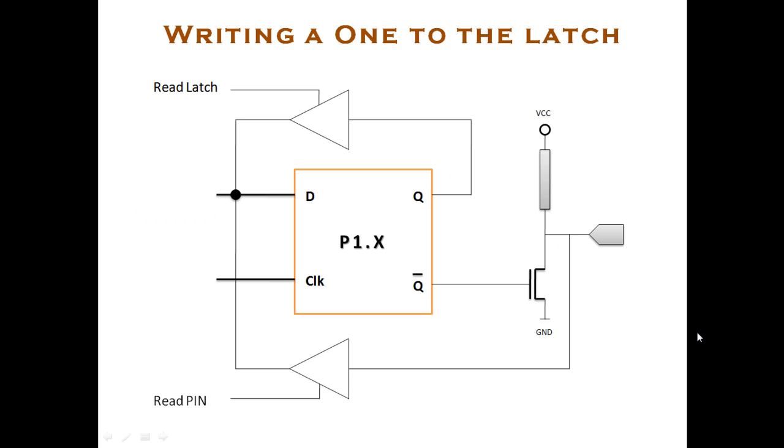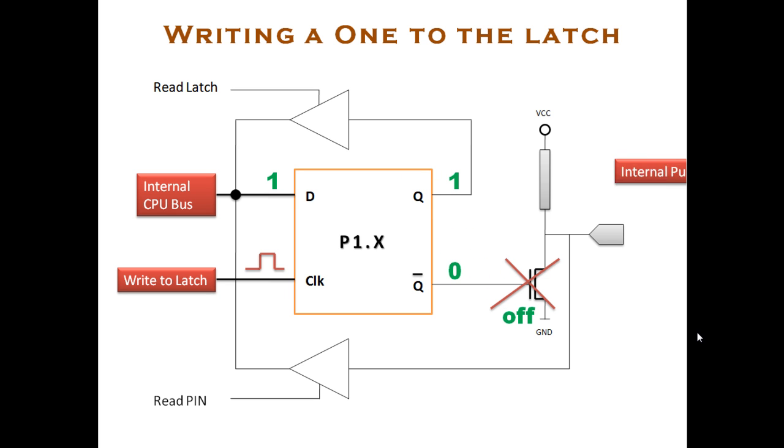Let us see how we can write a 1 on this latch. The process is the same. Give a 1, clock it, you get output as 1 and Q bar as 0. This is important. This puts the transistor in off state. There is an internal pull-up load inside the 8051 which will pull this pin to VCC and the output will be 1.